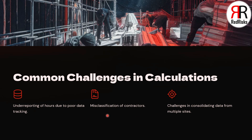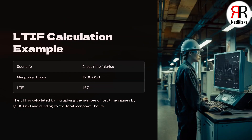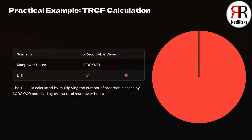Let's apply the LTIF formula. In this example, there were two lost time injuries and a total of 1.2 million manpower hours. The LTIF is 1.67 — that is 2 multiplied by 1,000,000, then divided by 1,200,000.